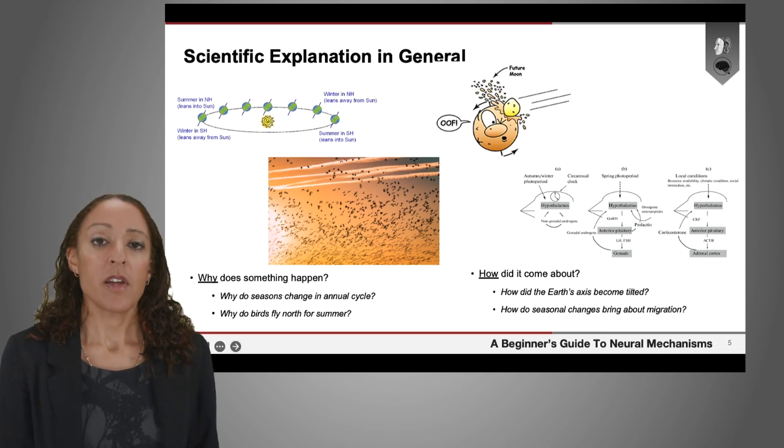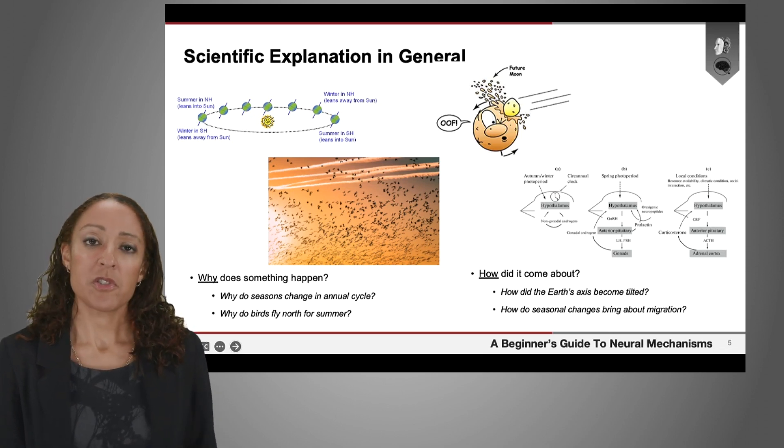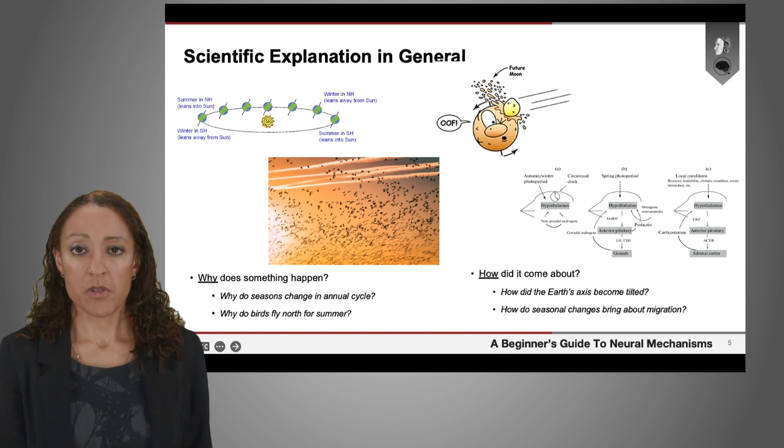So migration has the function of helping animals to move to places where food is more available to them as the seasons change. So that answers the question, why migration happens.